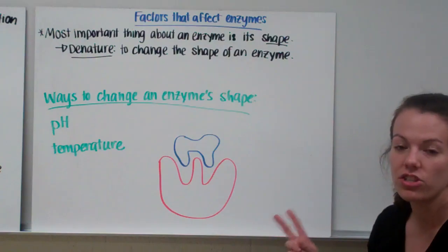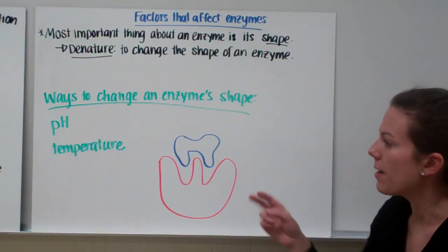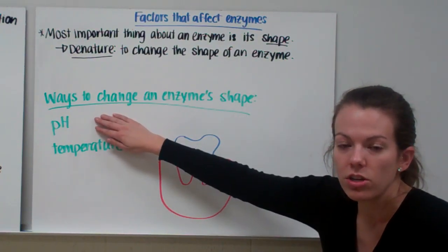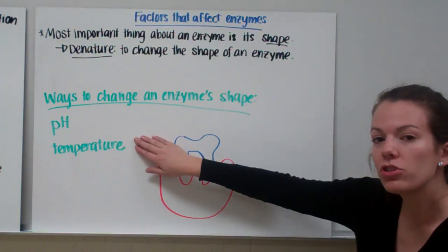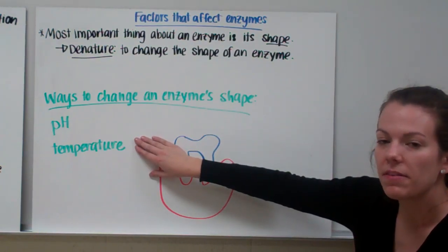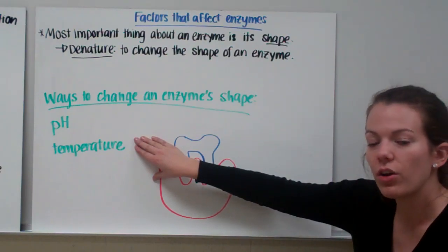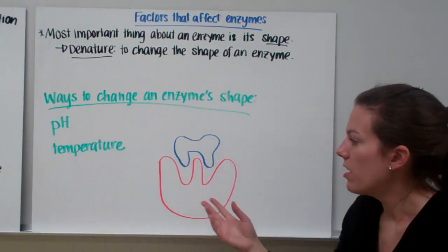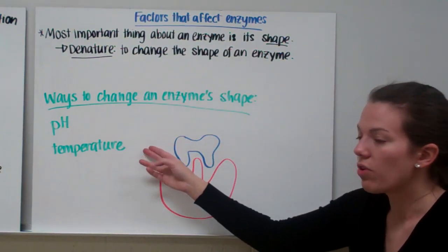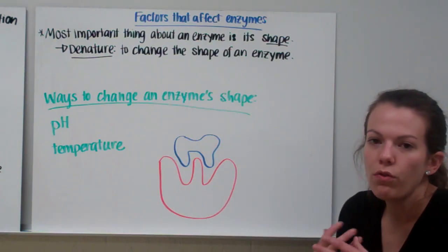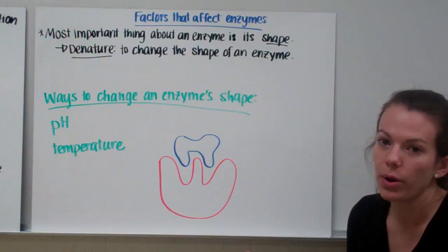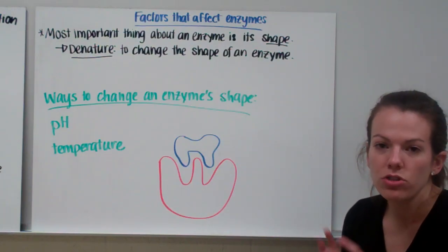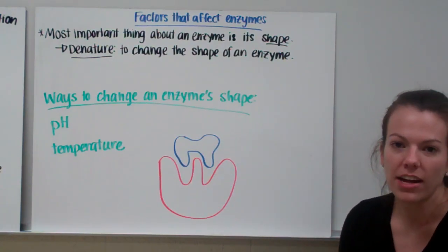There's two main ways to change the shape of an enzyme or to denature the enzyme. That's changing the pH, so putting an enzyme in an acid or in a base, and changing the temperature of an enzyme, so putting it in something very, very hot or very, very cold. So when an enzyme is in the wrong pH or the wrong temperature, it will begin to unfold or change shape. It will be denatured and it will no longer work. So that's it for enzymes. Just remember, enzymes speed up reactions.